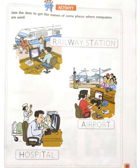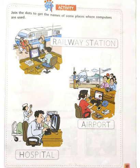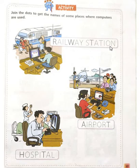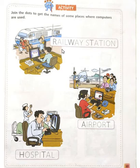Activity: Join the dots to get the names of some places where computers are used. Look at this picture — what is this? Railway station. R-A-I-L-W-A-Y, railway, S-T-A-T-I-O-N, station. What is the use of computers at a railway station? To book and cancel tickets, they use computers.